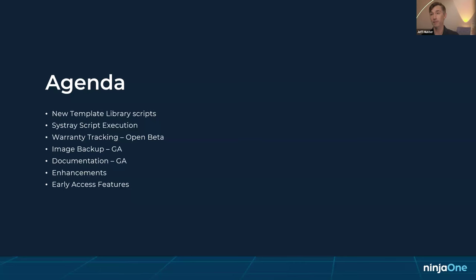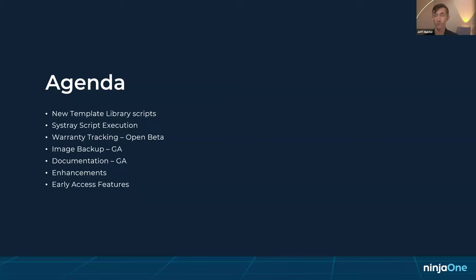We'll use some of those new template library scripts with the new SysTray script execution functionality. This lets you grant the ability to run an automation to your end user. You can build out menu options in the SysTray, and one option is now to run an automation. Use cases include self-service application installs for end users, as well as troubleshooting capabilities to help users self-diagnose issues and reduce ticket volume.